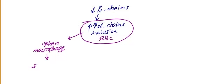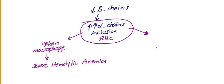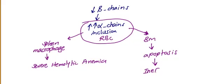The result of this process will be severe hemolytic anemia. If the alpha chain inclusion red blood cells are in the bone marrow, they will undergo apoptosis. This process of red blood cells with inclusion bodies undergoing apoptosis in the bone marrow is called ineffective erythropoiesis.